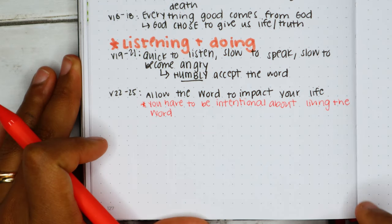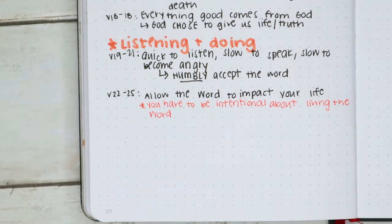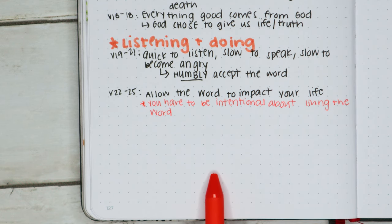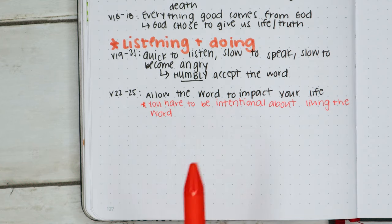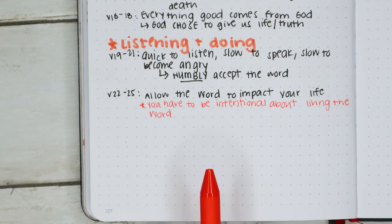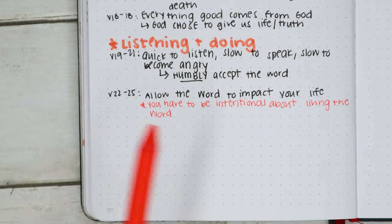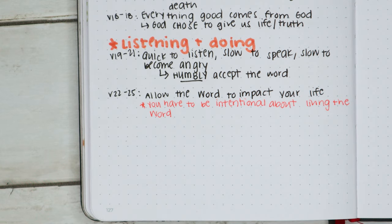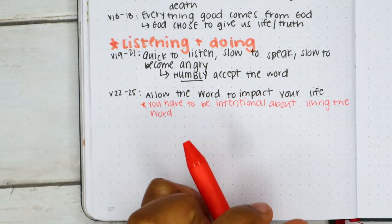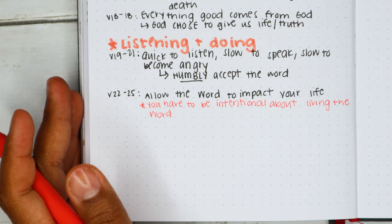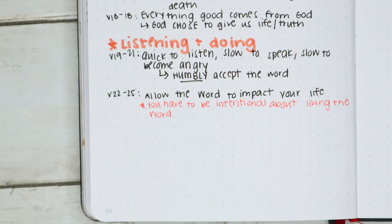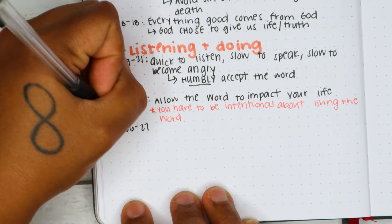Because this world will not let you easily walk in Christ — it's getting worse and worse. If you look intently into the perfect law that gives freedom and continue in it, not forgetting what you've heard but doing it, you will be blessed. Those who consider themselves religious yet don't keep a tight rein on their tongue deceive themselves. Being a Christian — following Jesus — starts with your heart, the things that come out of your mouth, the way you think, the way you see people, and the way you see yourself.